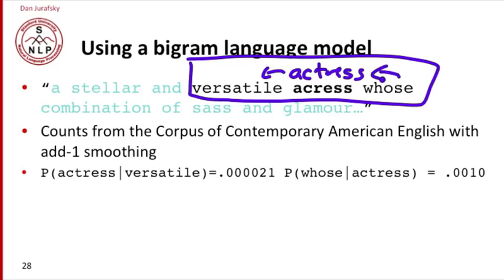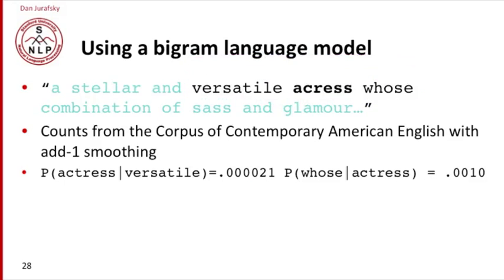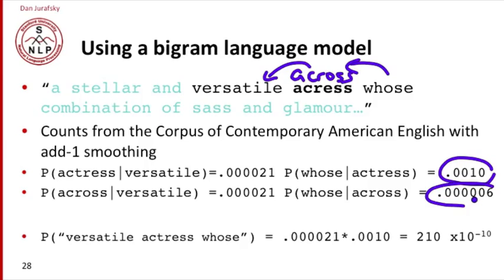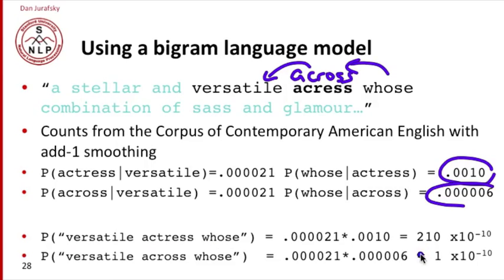Now let's do the same thing for another candidate, the original candidate that was preferred by the unigram model, the word across. We'll compute the probability of across given versatile times the probability of whose given across. You can see that the probability of whose given actress is much higher than the probability of whose given across. 'Actress whose' is just a likely sequence.